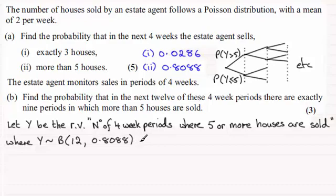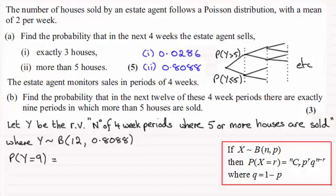So what we've got to just work out now is the probability that there will be exactly 9 periods in which more than 5 houses are sold. So that's going to be the probability that Y is equal to 9. And to work this out, all we need to do is use the binomial probability formula. You should be familiar with that, but if not, just a brief reminder, here it is here.